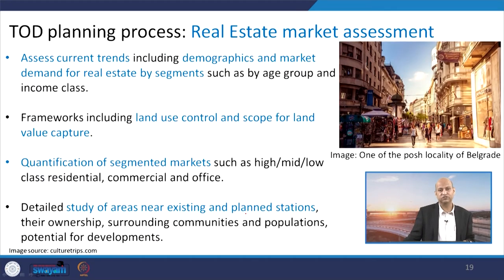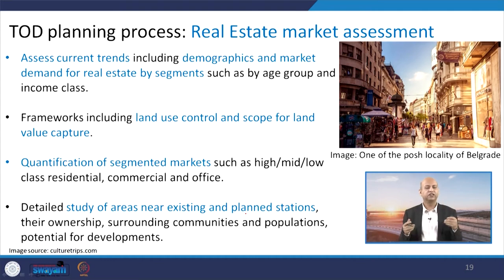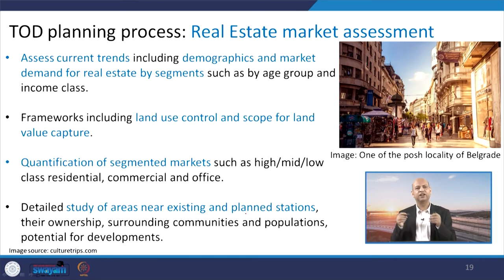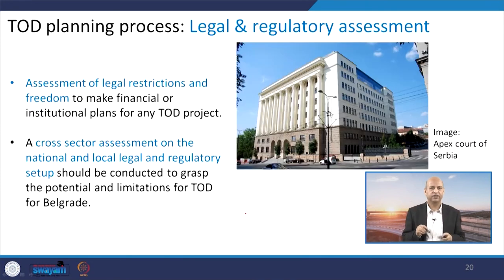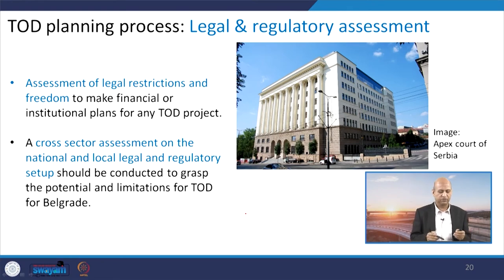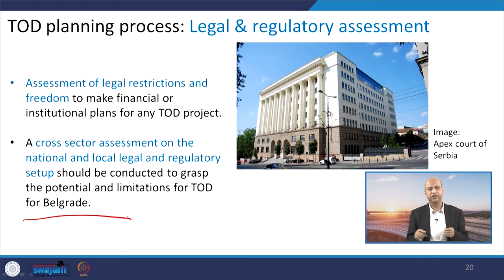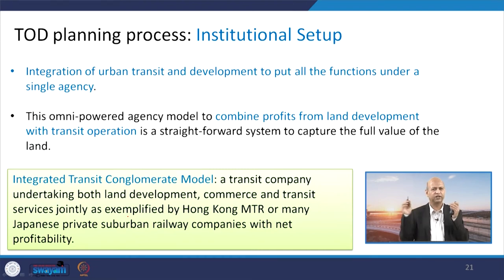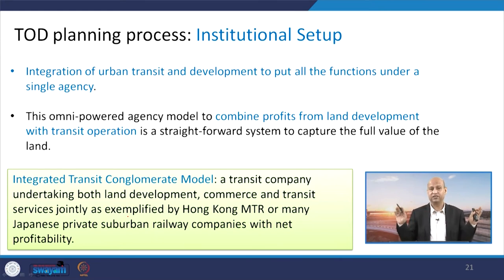Real estate market assessment is very important — if there are already very expensive land masses, it will be difficult to implement the project on the ground, and you may need elevated solutions. In that framework, land use control and planning scope must be taken care of to implement the project with the least cost. The legal and regulatory assessments, institutional plans, and financial frameworks must all be addressed because you need a lot of money. Limitations in legal and regulatory assessment must be taken care of so that there are no bottlenecks afterwards — otherwise people will sue and the project will be delayed. Everything must be completely clear before launching the project.